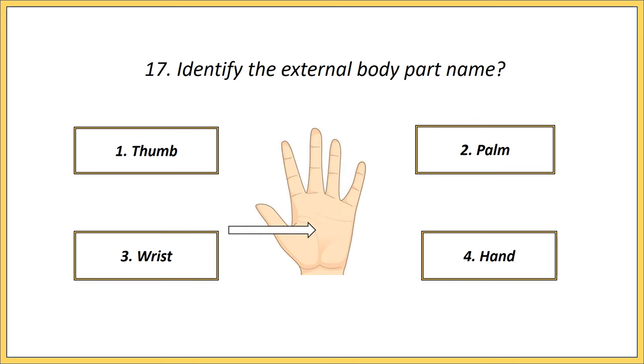Seventeenth one. Identify the external body part name. Options: thumb, palm, wrist, hand. Answer is palm.